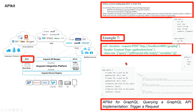Here you can see the GET response. The response contains id, title, and body for each of the posts.